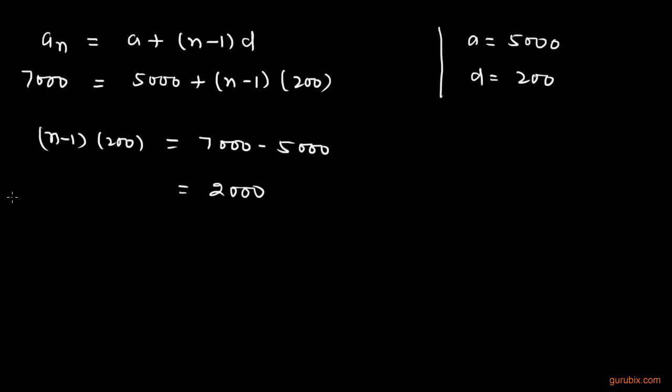Multiplying 200 by (n minus 1), we get 200n minus 200 equals 2000, which gives us 200n equals 2200.